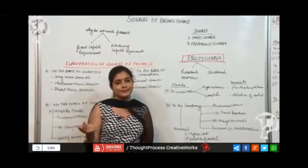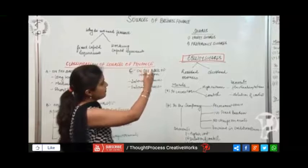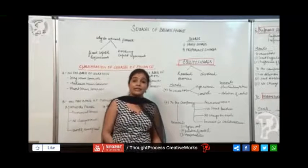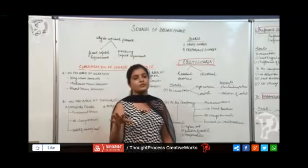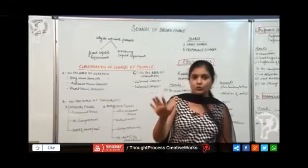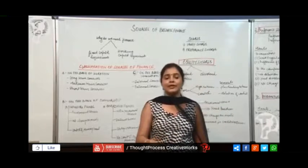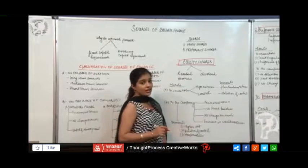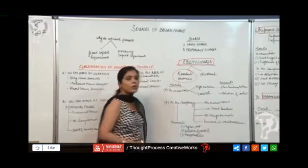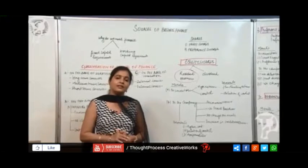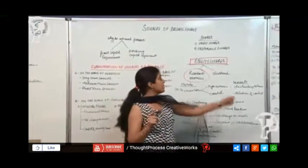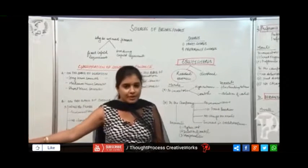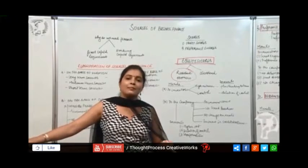By holding that share, by purchasing that share, you become one of the owners of the company. Now shares can be of two types: equity shares and preference shares. When we talk about equity shares, if you purchase equity shares of a particular company, then your money is going to remain invested in that company till the end, till the time the company is wound up.